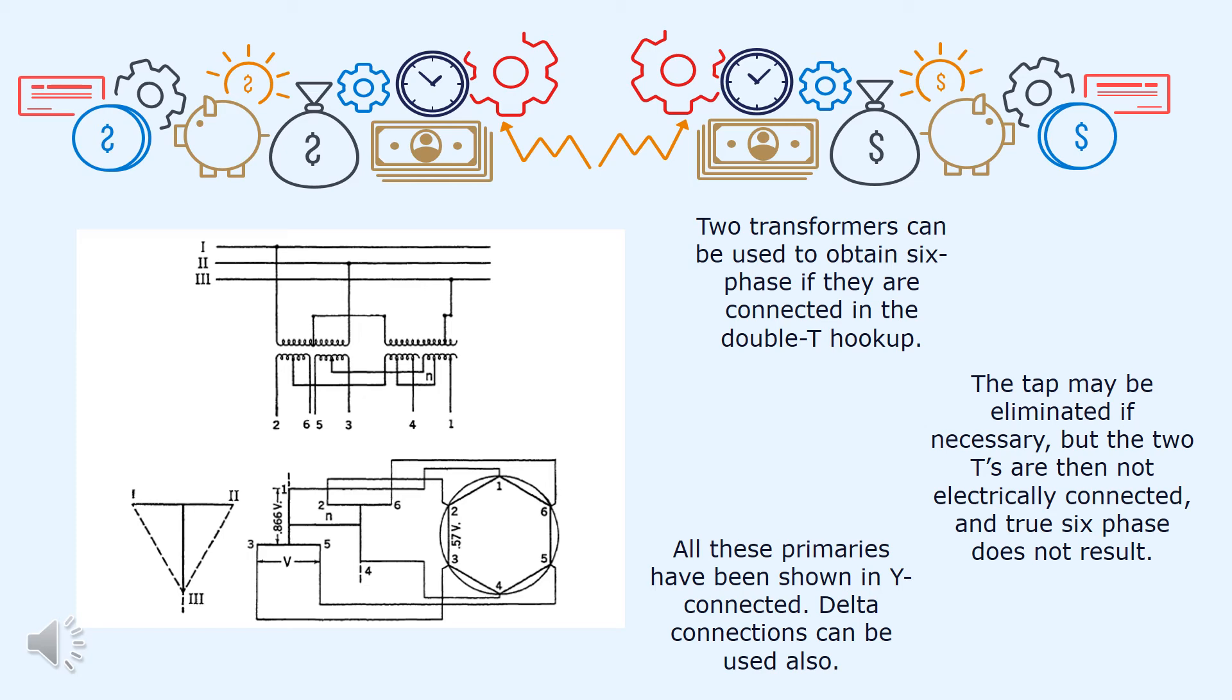But as with the double delta, when tied together on the same load, magkakaroon ng correct phase relationship which is maintained. This connection can also be used to transform from two to six-phase. So all these primaries have been shown in Y-connected. Delta connections can be used also, pero meron siyang certain conditions that causes trouble from harmonics.